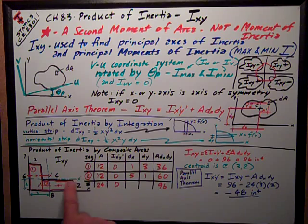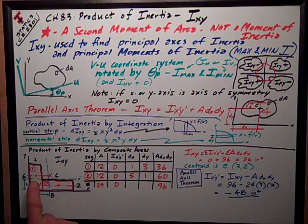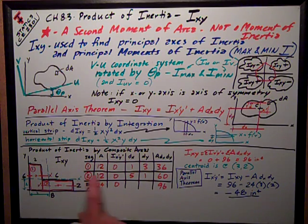Because the centroidal axis is an axis of symmetry, actually both of them are, IX prime Y prime, its product of inertia by its own centroid is zero.